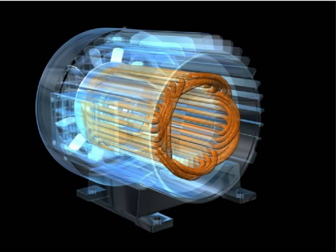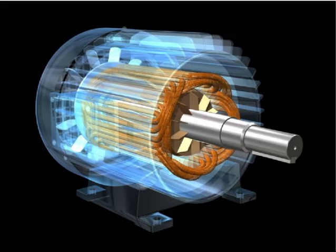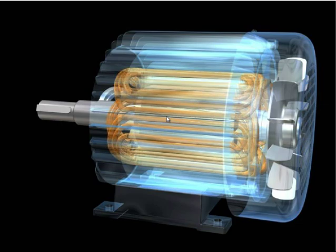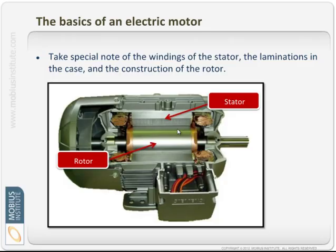The induction motor is made up of two key components. The first is the stator — the stationary part around the outside of the motor with all those windings — and the rotor inside, which is obviously the part that spins. The idea of the stator is to create a rotating magnetic field that runs around the motor. Current will be induced into the rotor, creating its own magnetic field, and that magnetic field can generate twice line frequency vibration if there's a problem with the stator.